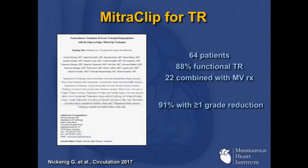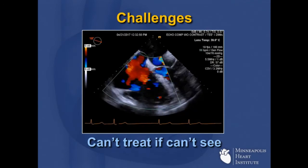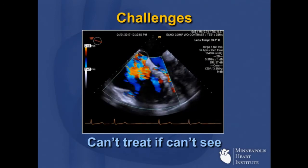The images Richard showed earlier were quite satisfying in terms of relief of the regurgitation — the RV looks maybe a little smaller. She was a lot better at follow-up. There's a lot of excitement about mitral clip for TR. It's currently off-label worldwide. A paper published by George Nick reported 64 patients, 88% functional, 22 combined with mitral clip therapy, and 90% of the time they got at least one grade reduction — generating a lot of excitement for this space.